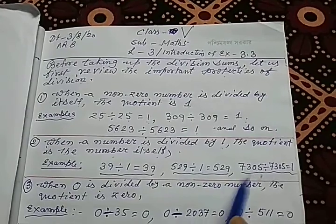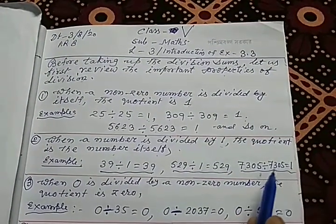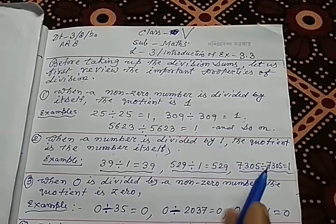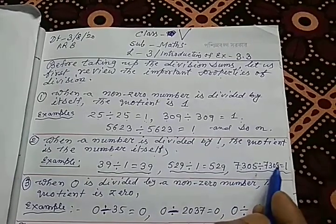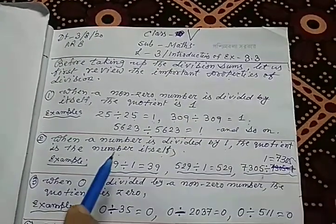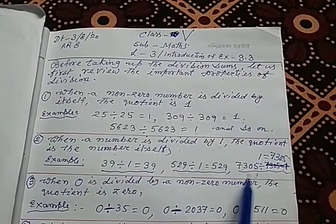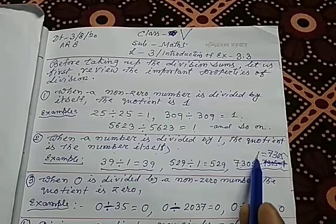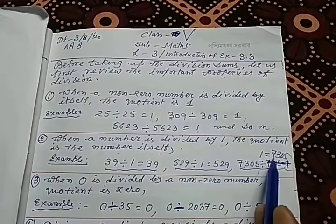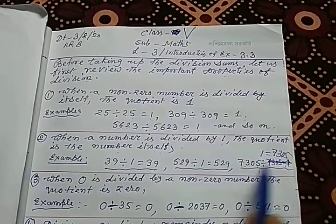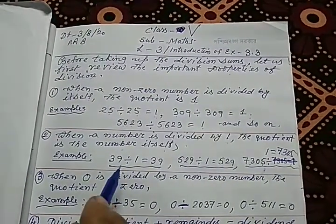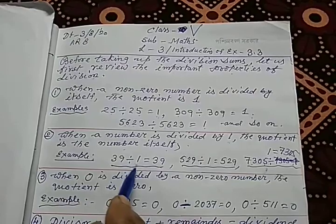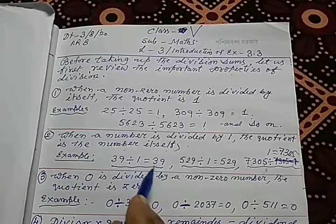Sorry, there was a mistake in the previous example. 7,305 divided by 1, you will get the quotient 7,305. The main statement is: if you divide any number by 1, you will get the number itself as the quotient.